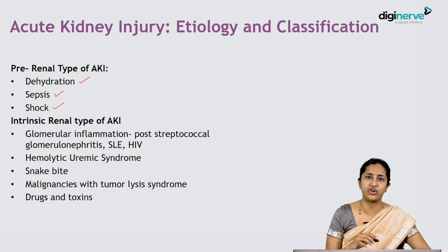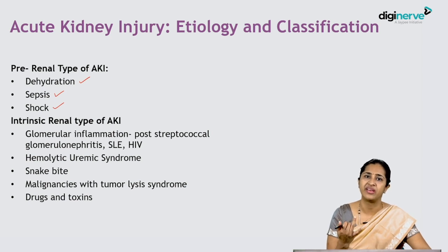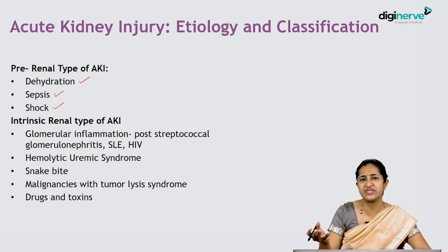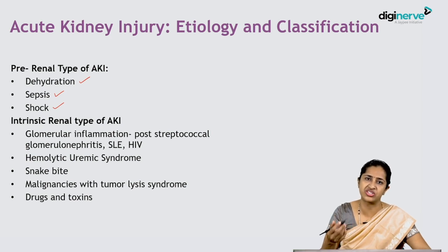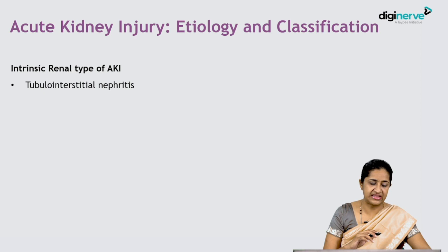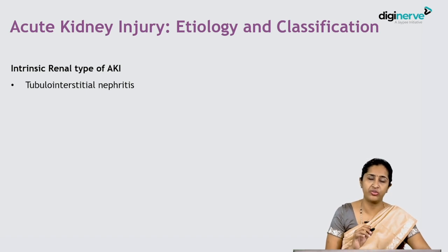Drugs and toxins are another cause. Common nephrotoxic drugs include vancomycin, furosemide, and aminoglycosides — all nephrotoxins. When I say toxins, I mean alternative herbal medicines prepared at home using roots and barks, which may have high concentrations of heavy metals. High concentrations of heavy metals can cause secondary nephrotic syndrome, and chronic ingestion can also cause acute kidney injury. The last cause of intrinsic AKI is tubulo-interstitial nephritis, with its various causes.